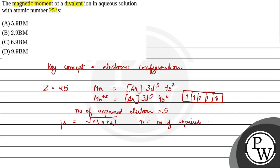We put n = 5, so μ = √(5 × 7) = √35, which equals 5.9 Bohr magneton. So the final answer is 5.9 Bohr magneton.